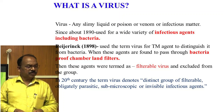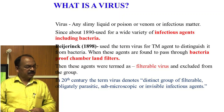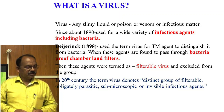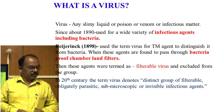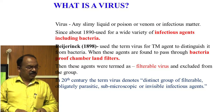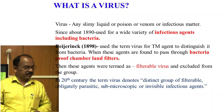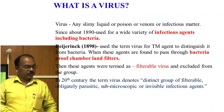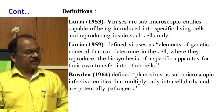When these agents were found to pass through bacteria-proof Chamberland filters, they were termed as filterable viruses and excluded from the bacterial group. In the 20th century, the term virus was used for a distinct group of filterable, obligatory parasitic, sub-microscopic, and invisible infectious agents.